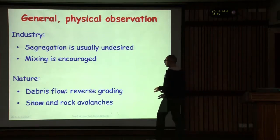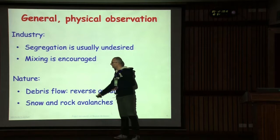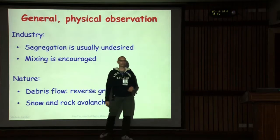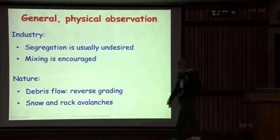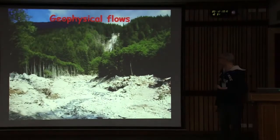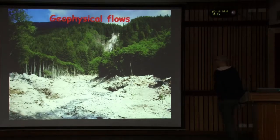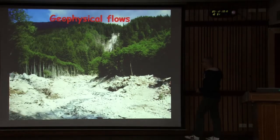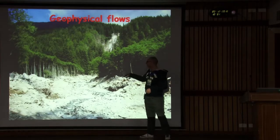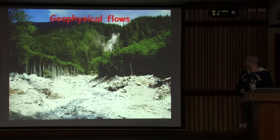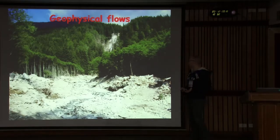The same thing happens in snow and rock avalanches. In debris flows we have water as interstitial fluid, while snow and rock avalanches are actually dry granular flows. After a debris flow comes down from a steep valley, you typically find larger boulders on the sides. During the transportation of the flow, you have a concentration of large boulders in the front, which can of course have consequences.